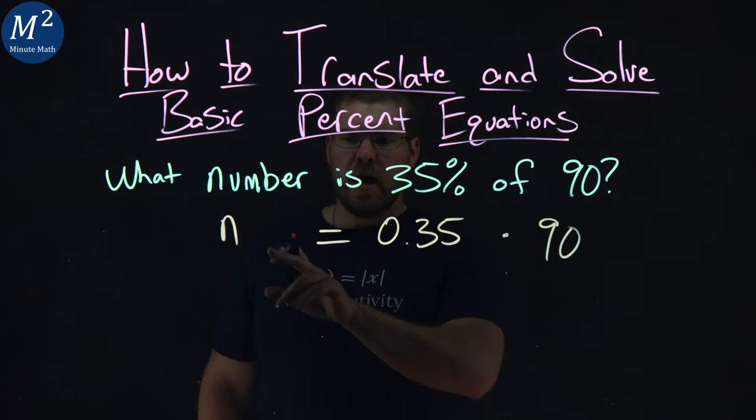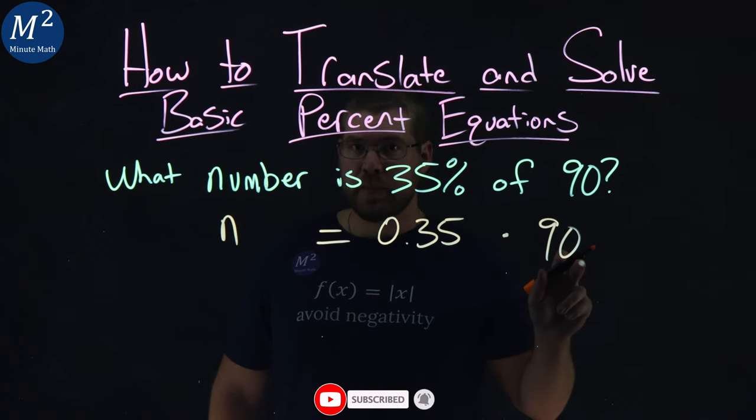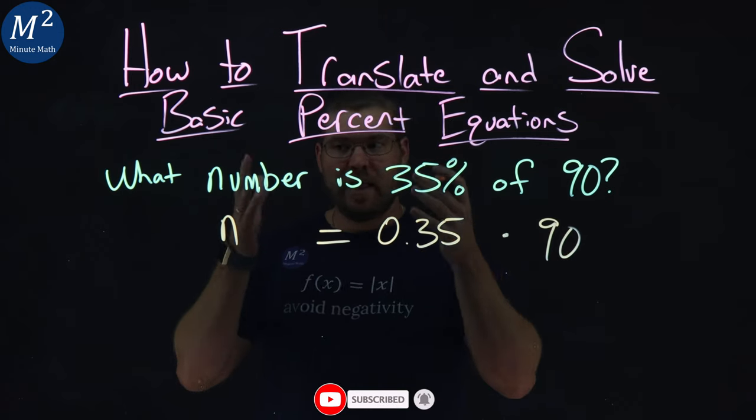Pretty easy. n equals 0.35 times 90. Well, now we need to simplify that.